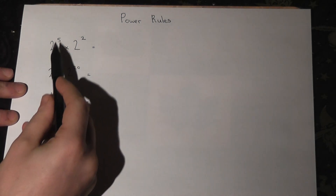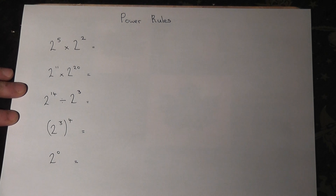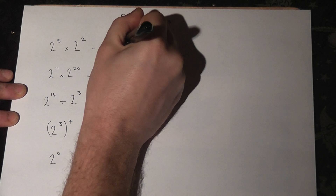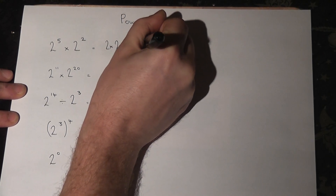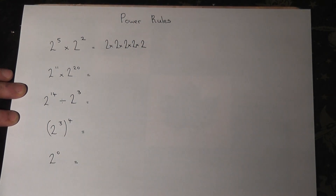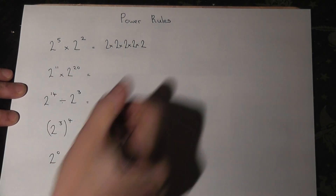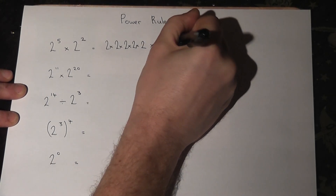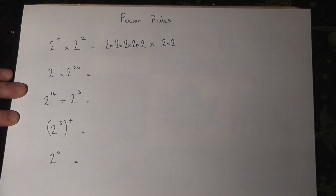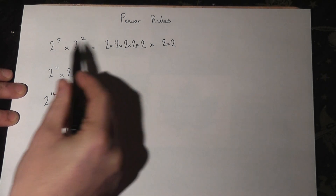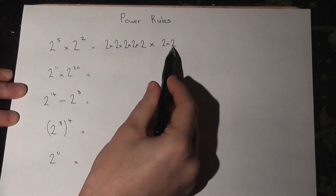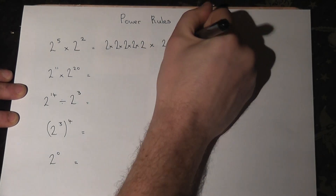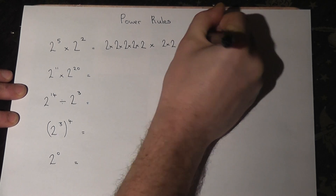The first one: 2 to the power of 5 times 2 squared. Now 2 to the power of 5 is just 2 times 2 times 2 times 2 times 2 — that's 5 lots of 2 multiplied together. The second part is then times by 2 squared, which is 2 times 2. So altogether there are 5 from the first part and 2 more from the second part, giving a total of 7. That equals 2 to the power of 7.